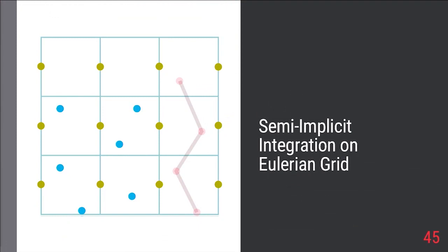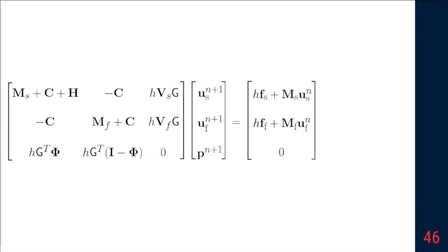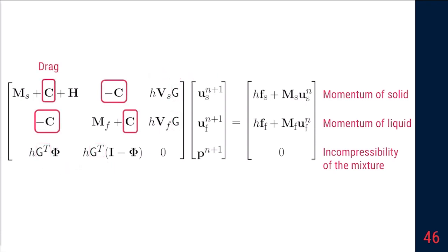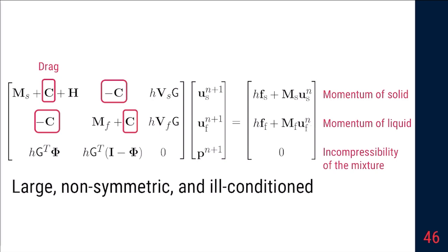We also need to solve equations for the mixtures on the Eulerian grid. We introduce a novel semi-implicit integration. After discretization and advection, we have three equations: the momentum equation of solid, and of liquid, and incompressible condition. As we see here, the pressure is coupled with velocity by divergence-free and pressure gradient. The two velocities are coupled by drag force. Note that we have a non-symmetric system. It tends to be ill-conditioned because we usually have large drag force, which makes the off-diagonal term very large. So how do we solve this challenge?